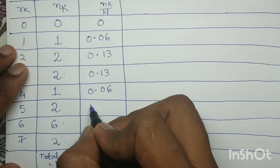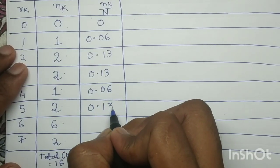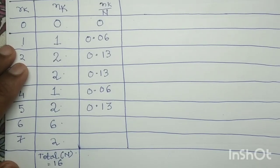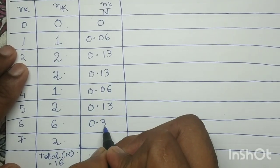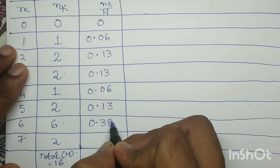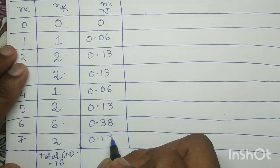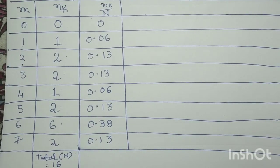For gray label 2 the PDF value is 0.13; for gray label 6 it is 6 divided by 16 = 0.375, which rounds to 0.38; and for gray label 7 it is 2 divided by 16 = 0.13. After performing normalization, next we determine the cumulative density function, the CDF, represented by sigma.